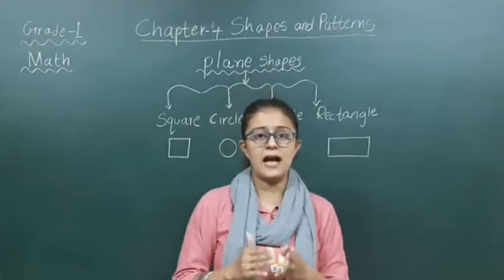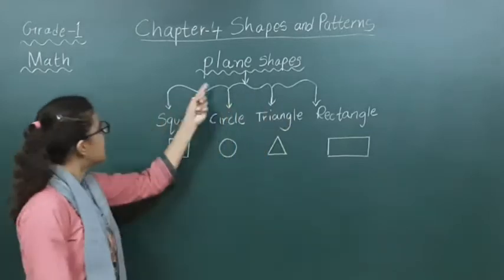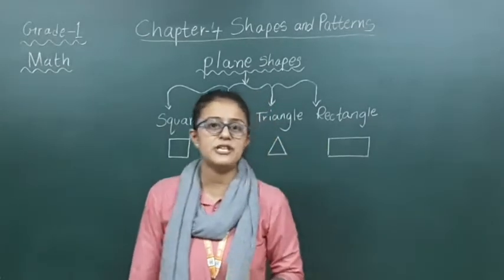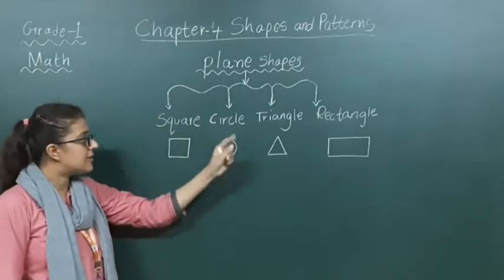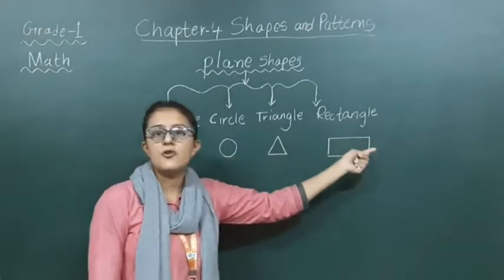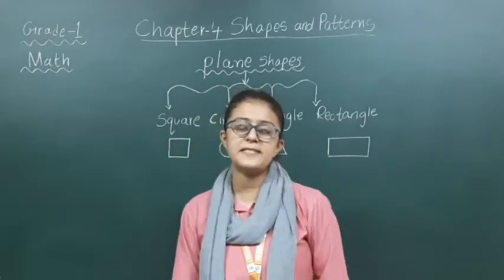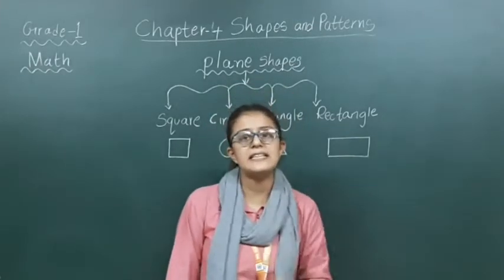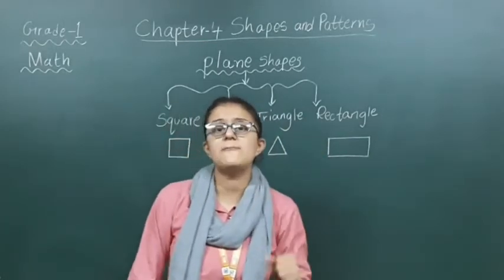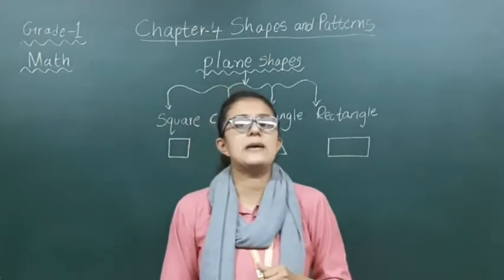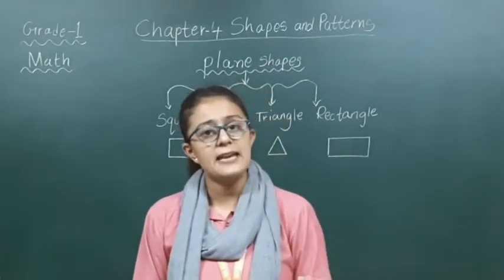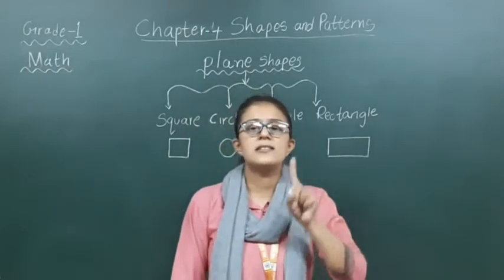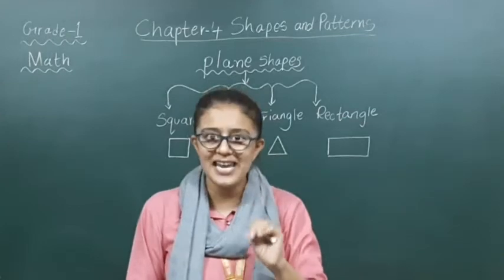So in this video, I am going to explain the plane shapes. In plane shapes, there are four main shapes: square, circle, triangle, and rectangle. How many shapes are included in plane shapes? First is square, second is circle, third is triangle, and fourth is rectangle. You have to make sure about this — it may come in tests and exams, asking how many total plane shapes there are and to name them.